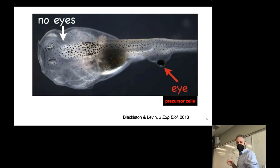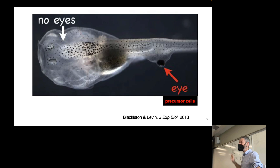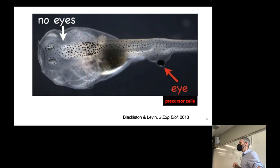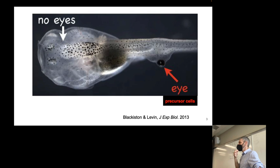Here's an example of an experiment that Doug Blackiston and Mike Levin — the head of the lab at Tufts — reported back in 2013. In this experiment, which is not xenobots or biobots, they took a genetically modified tadpole that couldn't grow eyes in the normal place. Doug surgically implanted eye precursor cells — a type of stem cell that typically in an adult frog develops into an eye — placed in the tail of the tadpole. Not only did this surgical procedure not kill the tadpole, the tadpole grew into a perfectly healthy frog with an eye on its back.